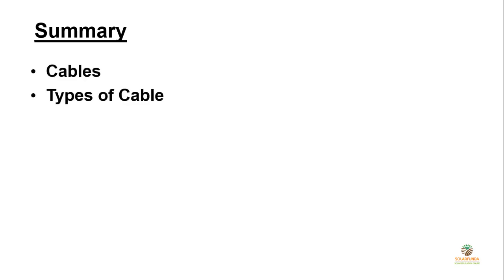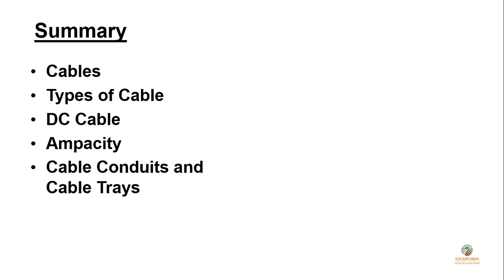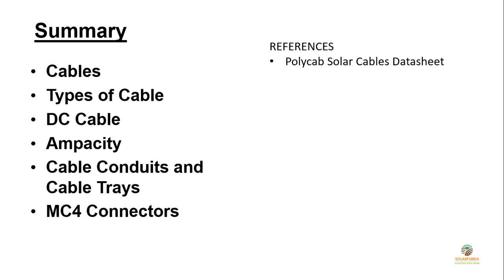Finally, we have come to the end of the session, in which we learned about cables, types of cable, DC cable, and the most important property — ampacity. We also learned about cable conduits, cable trays, and last but not least, MC4 connectors. Reference was taken from the Polycab solar cable datasheet, so if you want to explore more, you can download it from the Polycab website.